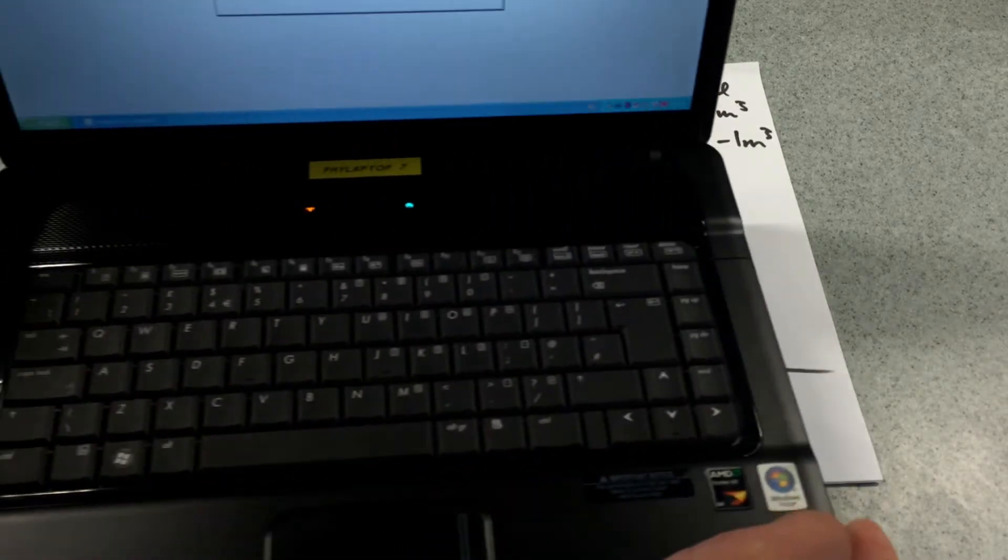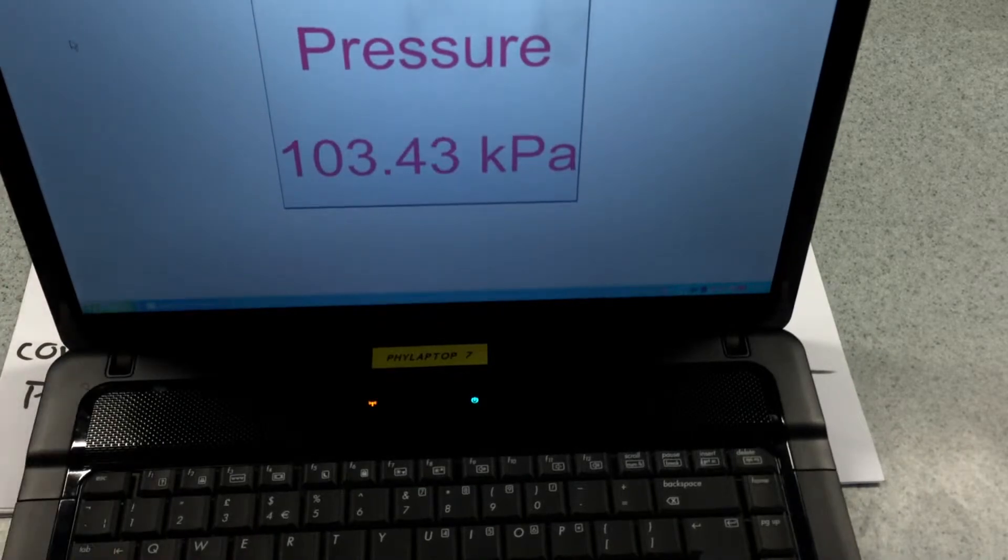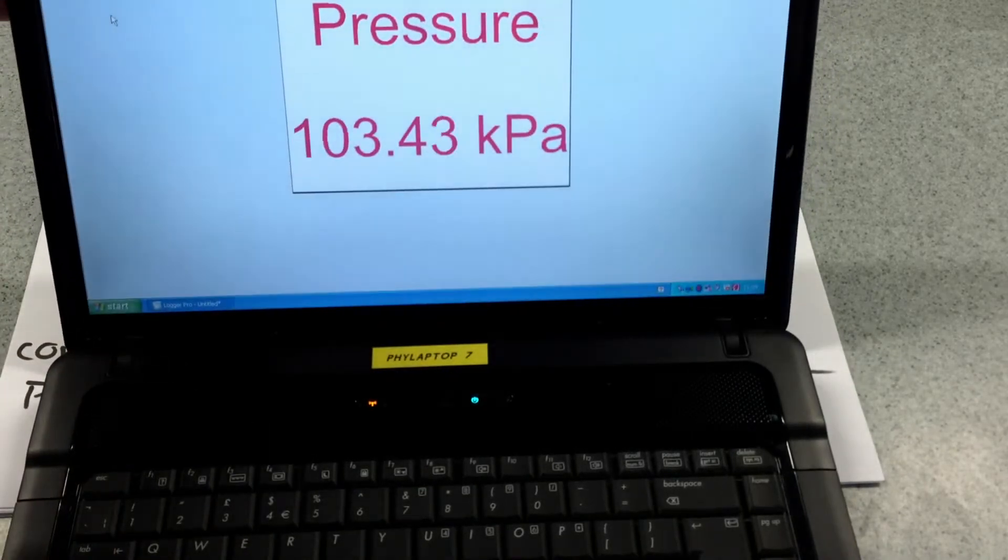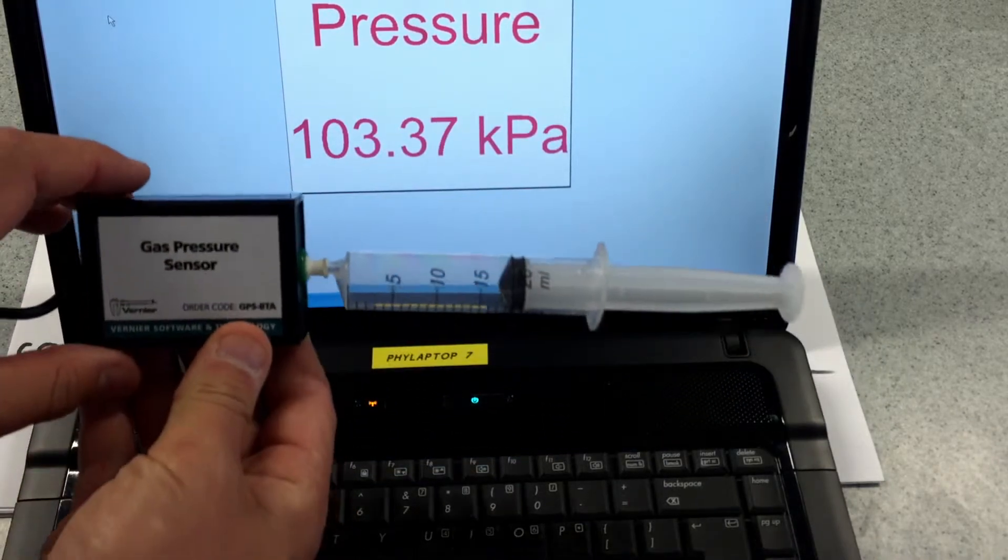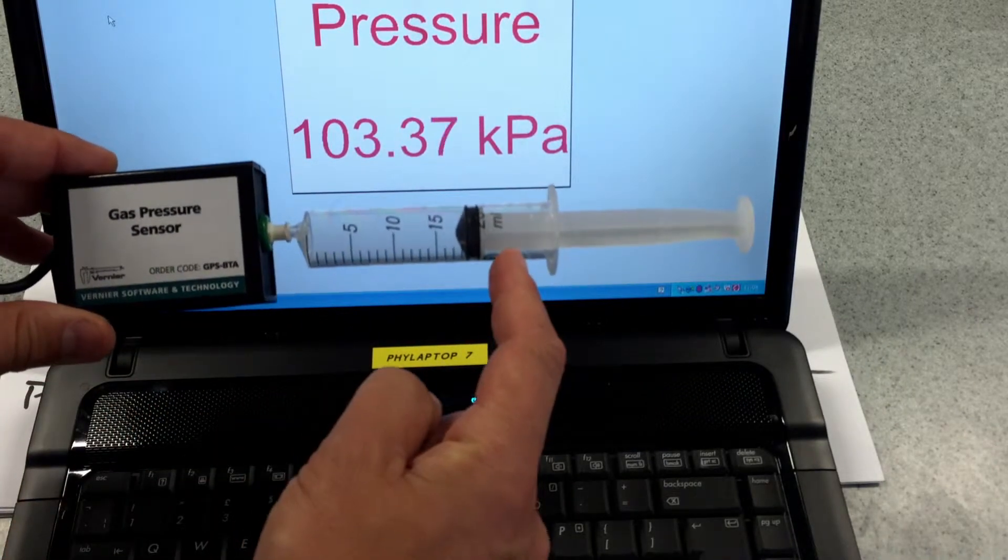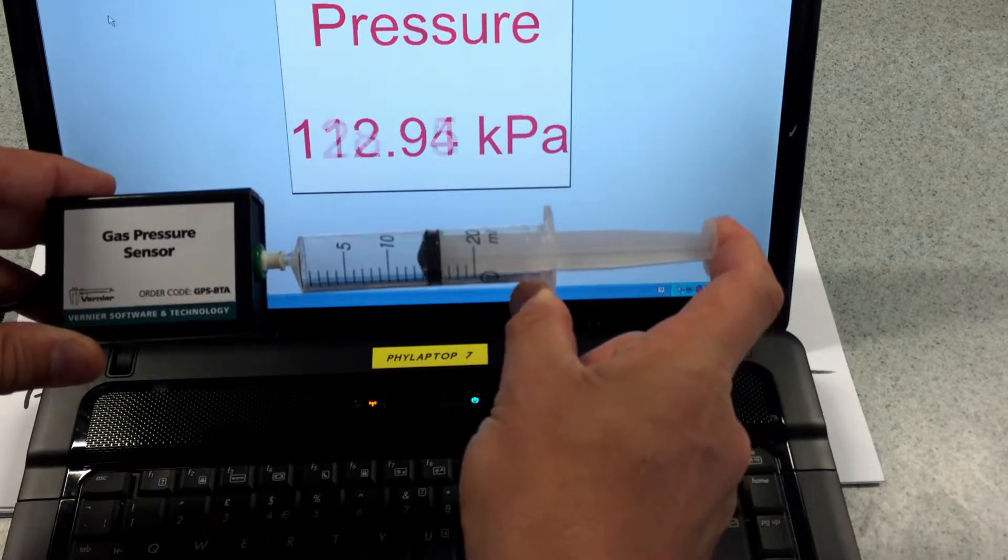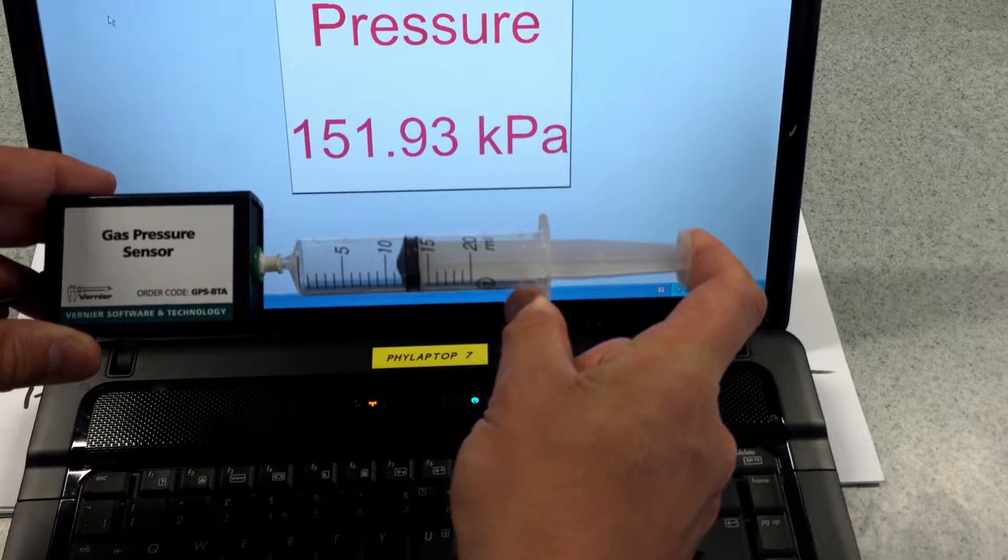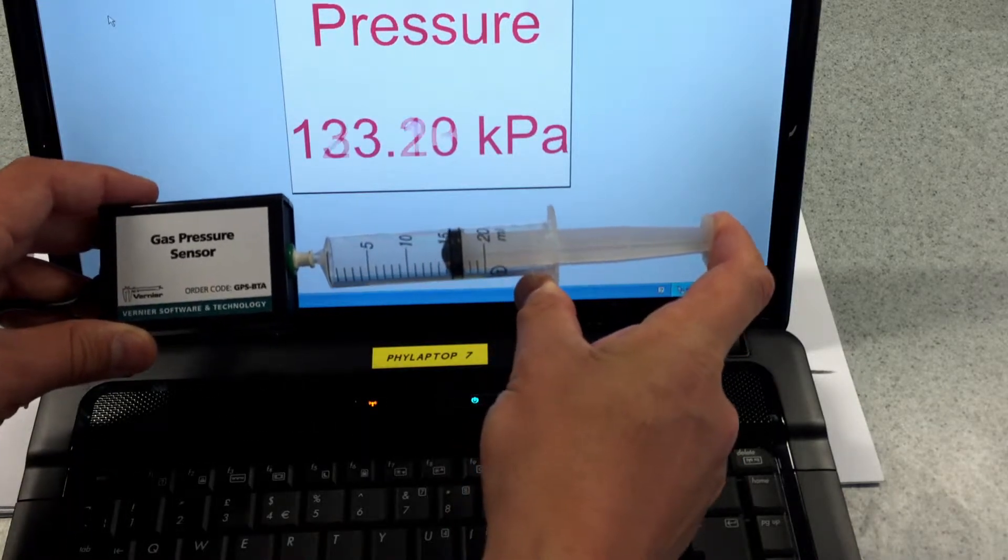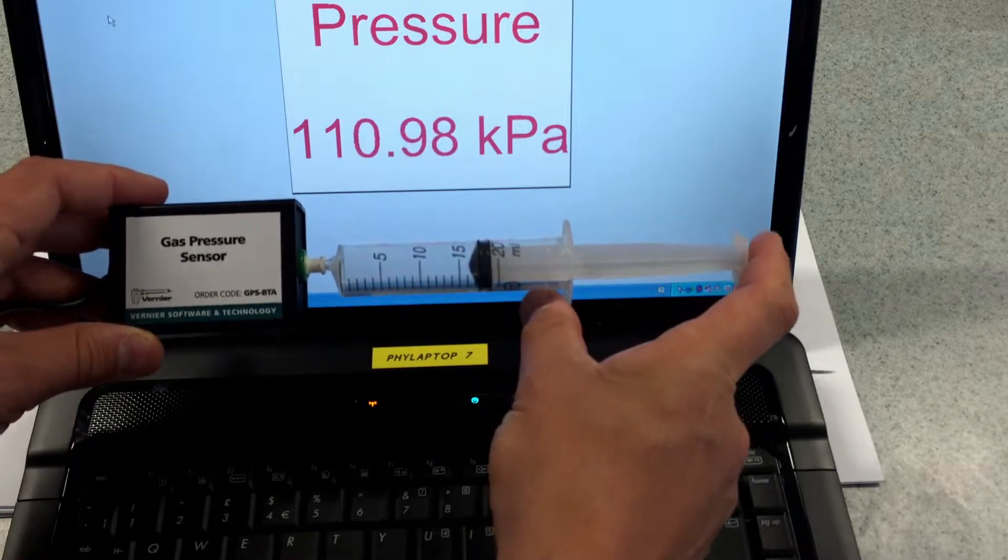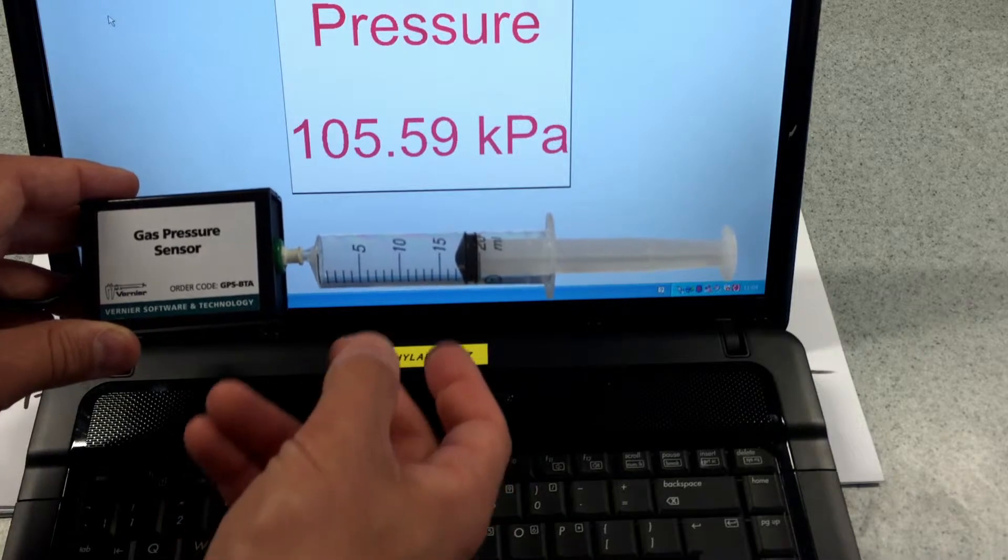So I have my computer and you probably see there a pressure on the screen. Now what's going on here is I have my gas pressure sensor and here is my syringe and as I move the syringe in and decrease the volume the pressure is increasing. As I move it back and increase the volume the pressure is decreasing. So you can see that inverse proportionality.